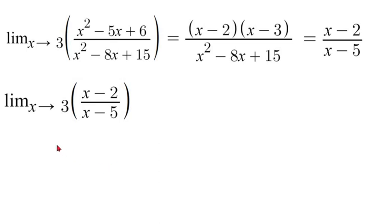Now all we need to do is plug in our 3 value. So we'll pull that out and it will equal 3 minus 2 over 3 minus 5, which reduces down to negative 1 half.